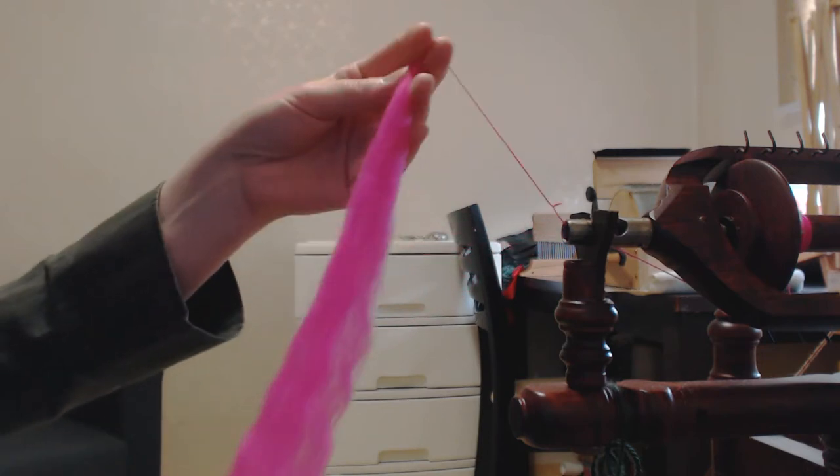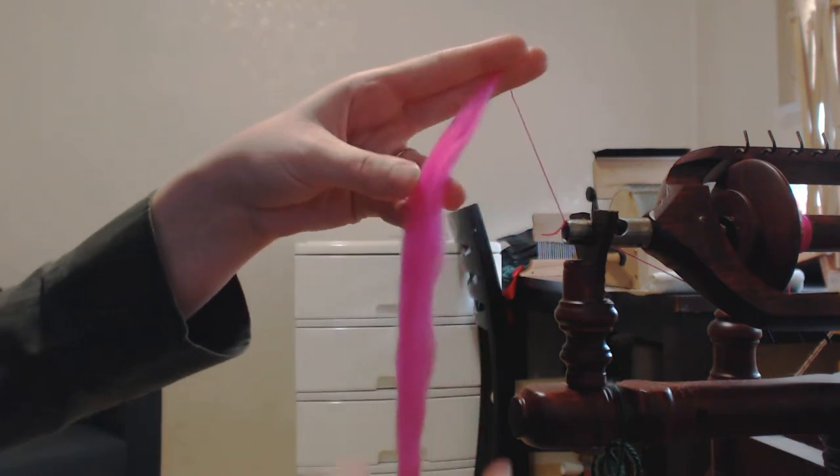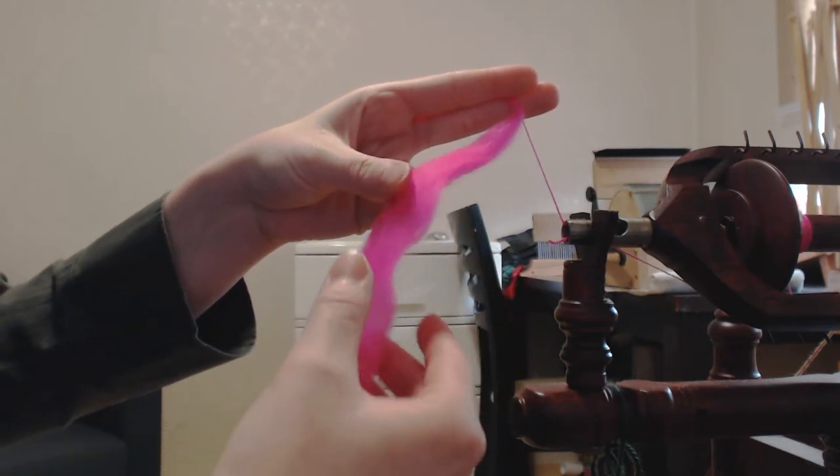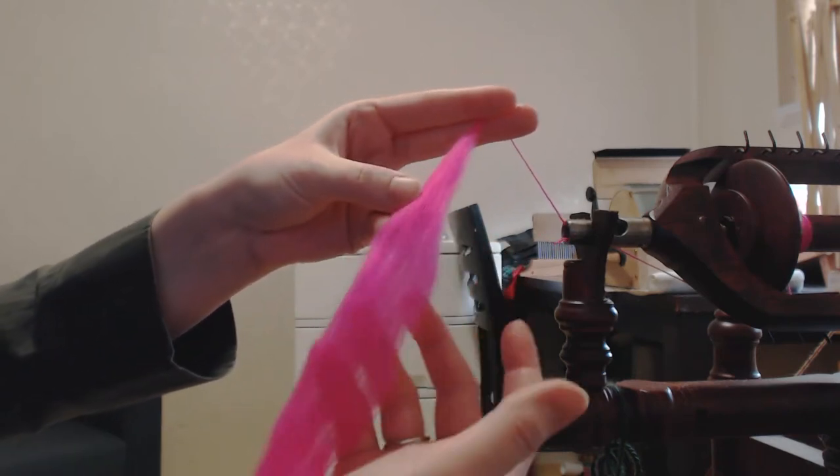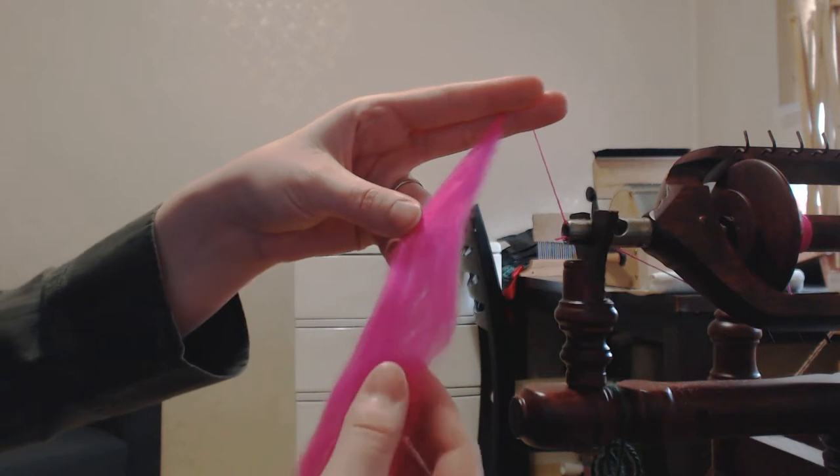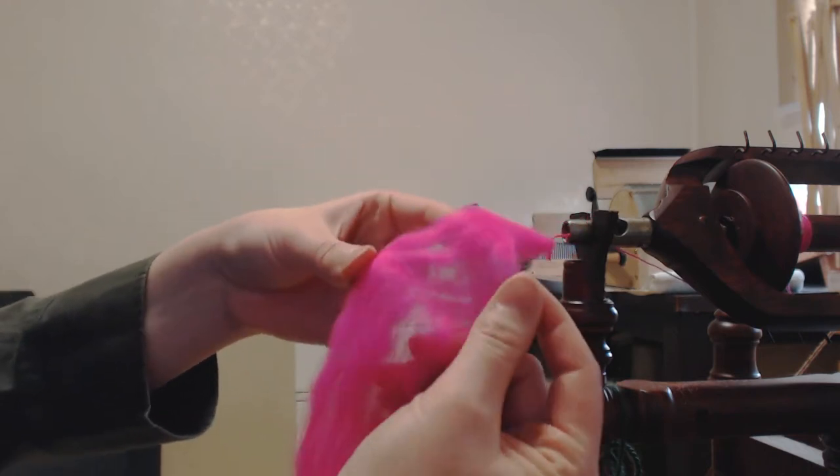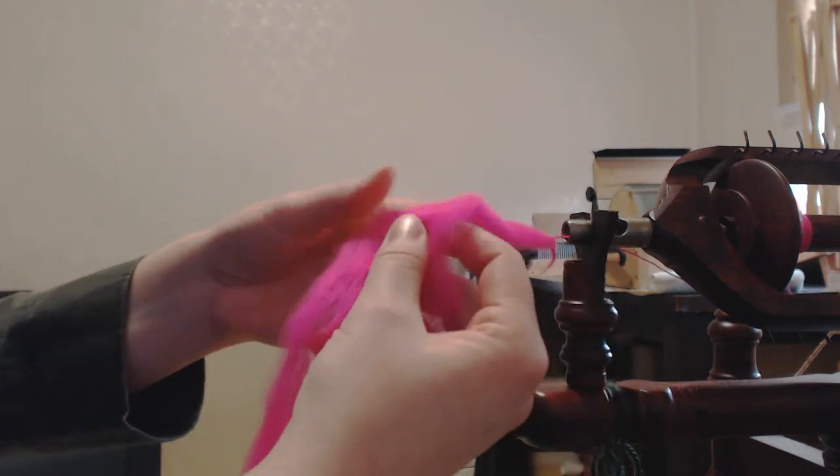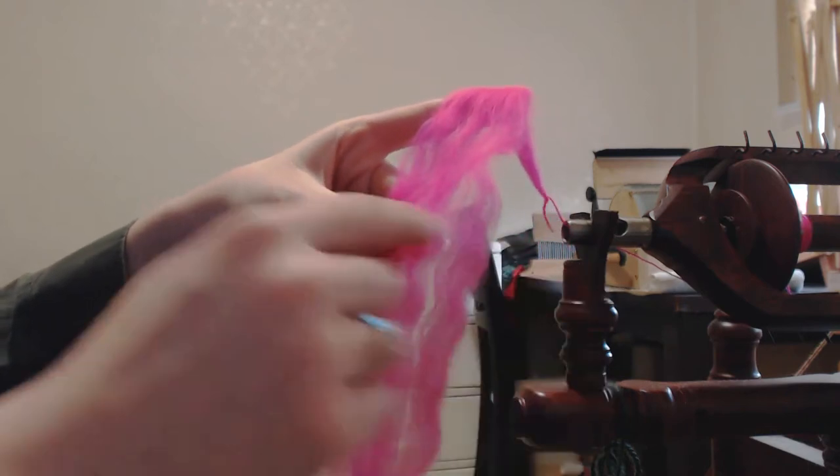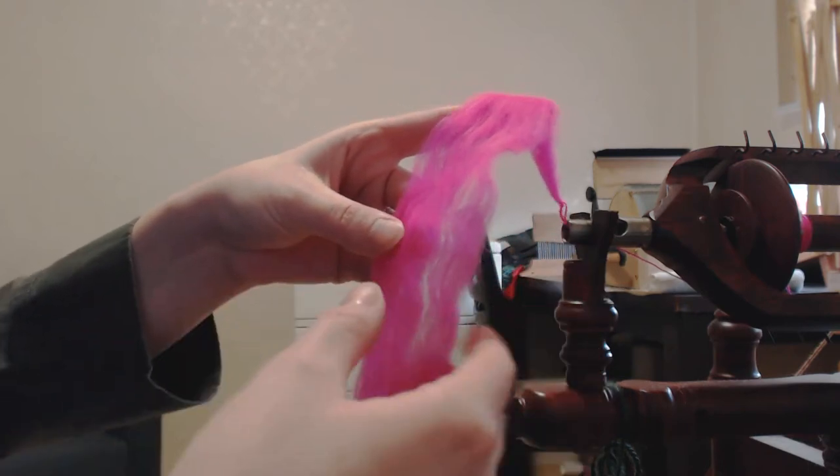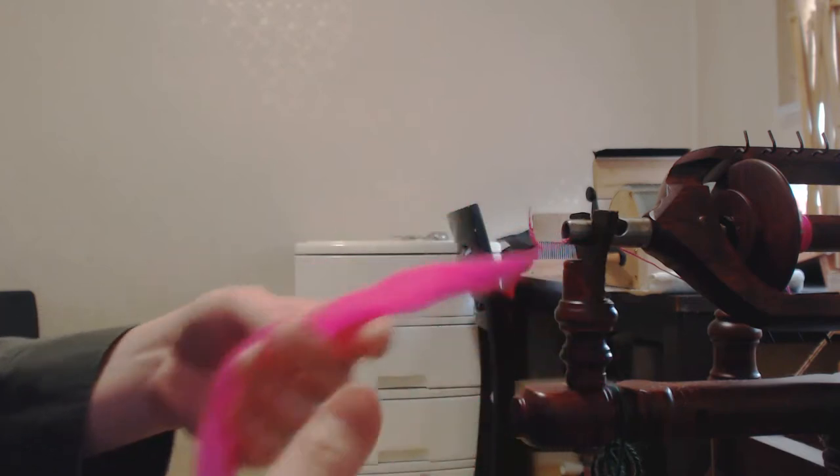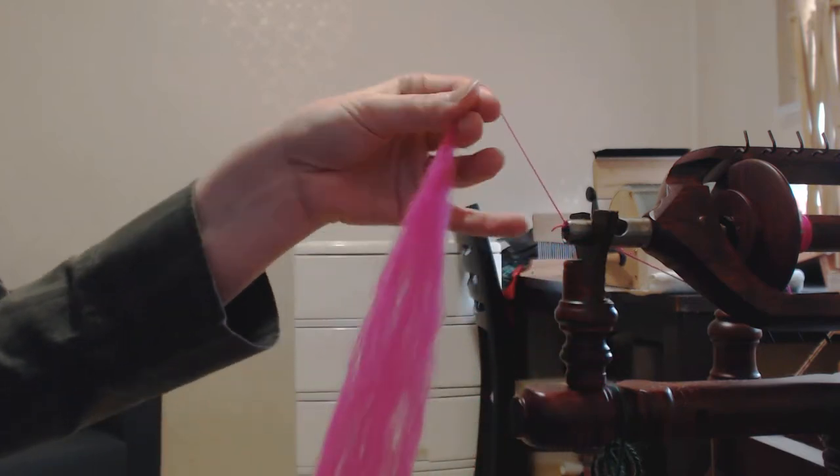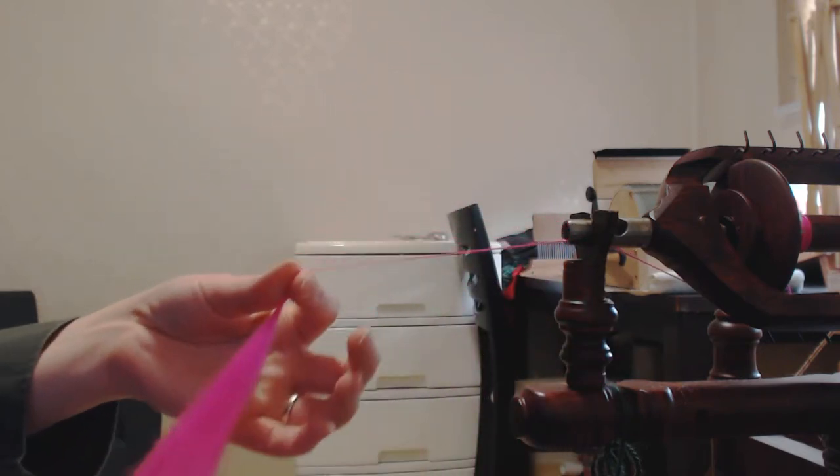The fiber that I'm using is just some combed top, merino combed top, and I divided it into 12 pieces, and then what I did for fluffing it, I just pulled the fiber apart like this gently. I wanted to keep the fibers together, but I didn't want them to be too compact. So there's the fiber, and I'm all ready for the spinning.